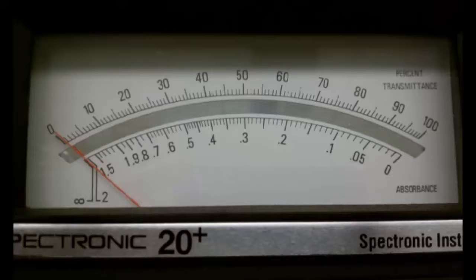You will be recording the absorbance which is on the bottom of the white display area. Please note that the tick marks are different depending on the two numbers they are between. For example, the tick marks between 0 and 0.05 have values of 0.01 each. Between 0.7 and 0.8 there is only one tick mark that has a value of 0.05. So make sure you record the correct decimal places and values.